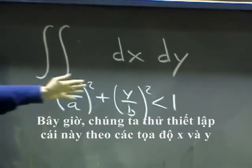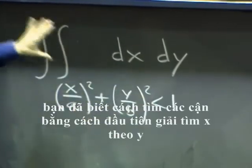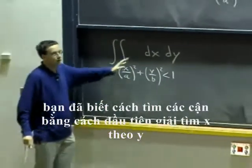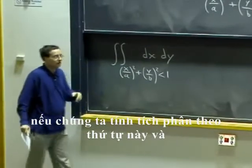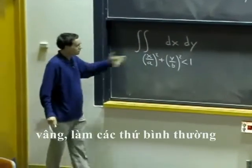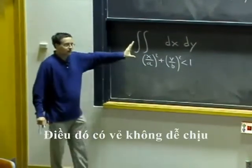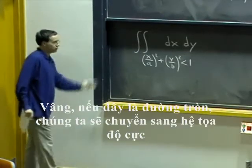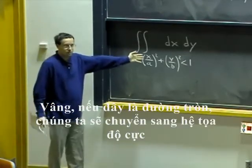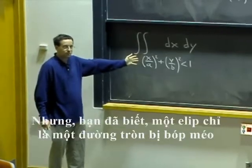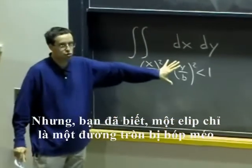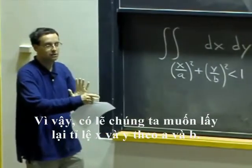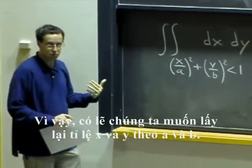Now, we can try to set this up in terms of x and y coordinates. You know, set up the bounds by solving first for x as a function of y if we do it this order. And do the usual stuff. That doesn't look very pleasant, and it's certainly not the best way to do it. If this were a circle, we would switch to polar coordinates. Well, we can't quite do that yet. But an ellipse is just a squished circle, so maybe we want to actually first rescale x and y by a and b to reduce to the case of a circle.